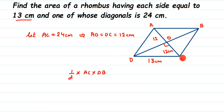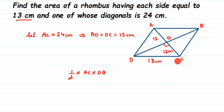Looking at the diagram, triangle DOC forms a right-angle triangle. The 90-degree angle is at O because in a rhombus the diagonals bisect each other at 90 degrees. The hypotenuse is DC — the side of the rhombus opposite the 90-degree angle. OC is the height and DO is the base of this right triangle.